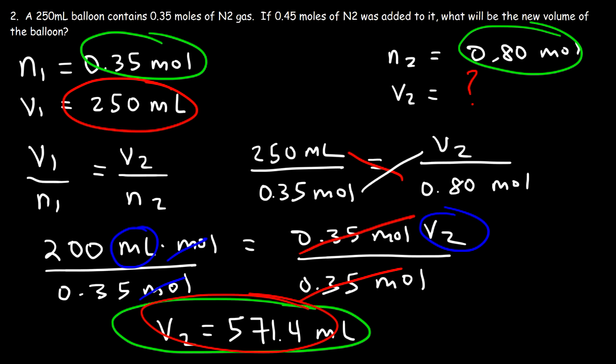This confirms the direct proportionality: as you increase the number of moles, the volume increases proportionally. If you double the number of moles, the volume doubles; if you triple the moles, the volume triples. It is a direct linear relationship — moles and volume are directly proportional.